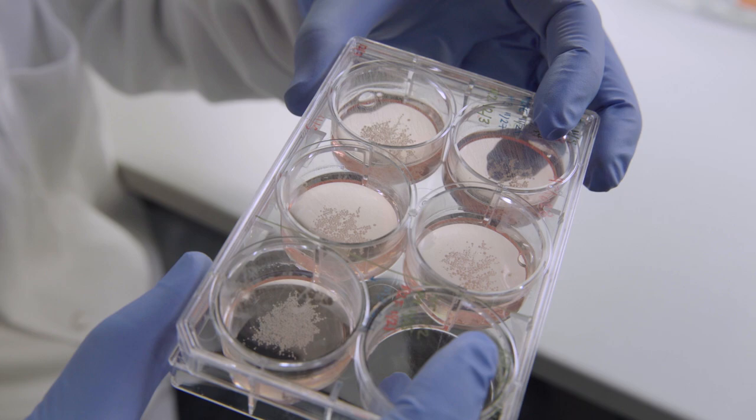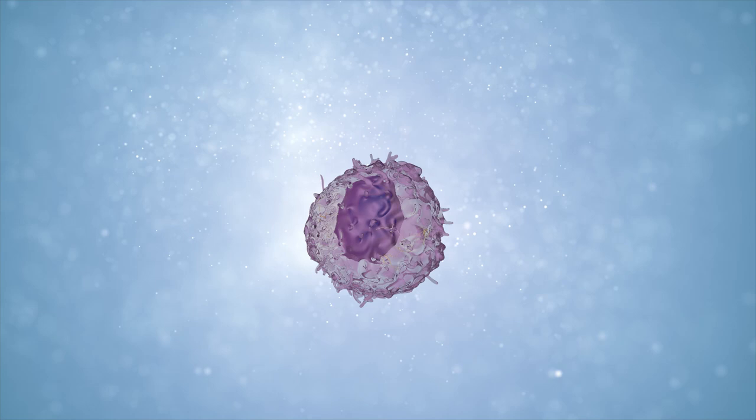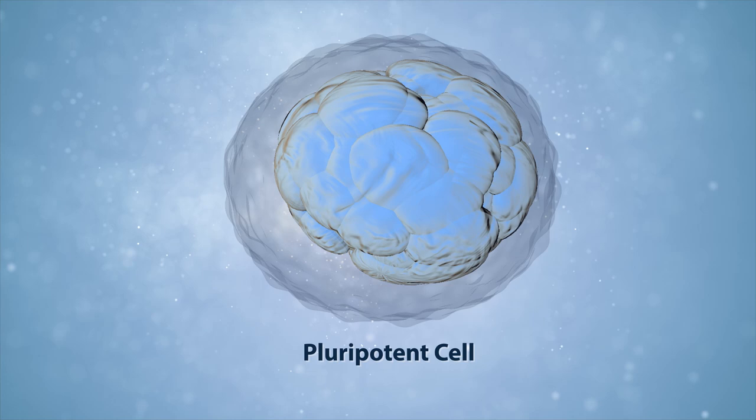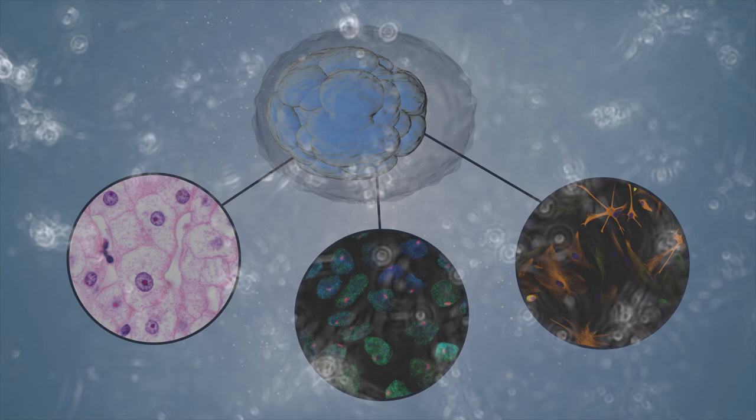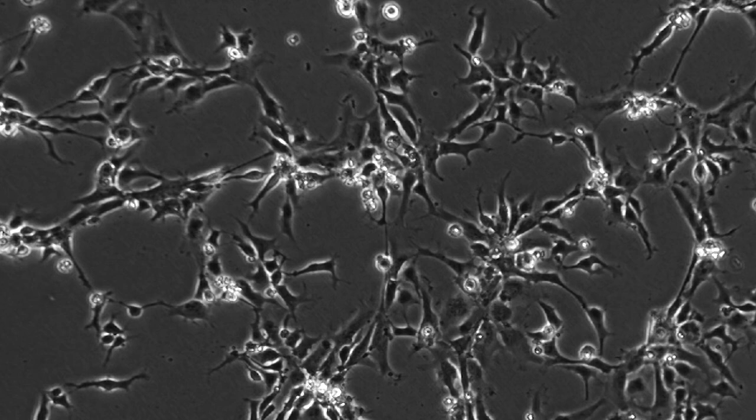2012 Nobel laureate Shinya Yamanaka discovered that by reactivating only four specific genes in adult cells, they would become pluripotent, which means they can be reprogrammed to make any tissue in the body like the neural and retinal cells the Moultrie and Wallen labs use, as well as many other types of cells used to study or treat diseases.